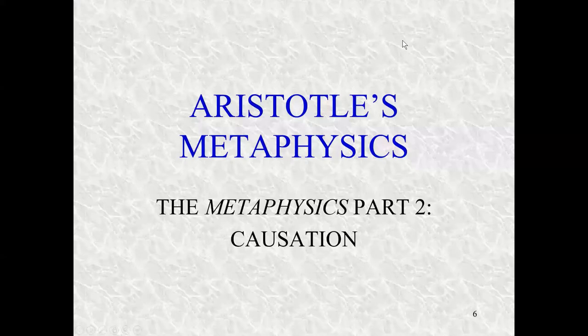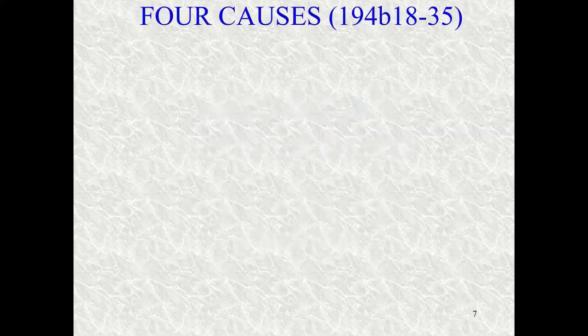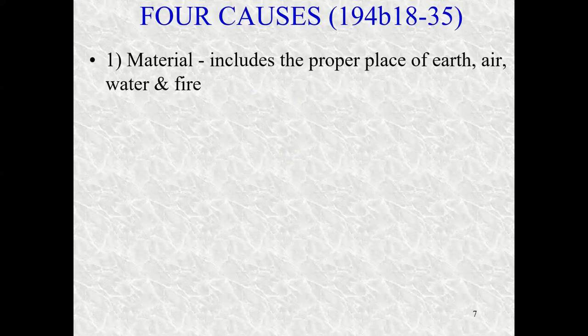We are continuing our exploration of Aristotle's metaphysics, looking at his work called The Metaphysics. In part two, we are looking at causation and how form and matter are significant for Aristotle in relationship to causation and nature broadly conceived. There are four types of causes according to Aristotle. Causation is very tricky and challenging to get a good grip on. Aristotle was probably the first person to talk about types of causes.